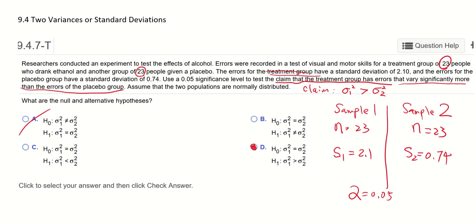Now we can use what we have to find the test statistic. Actually the test statistic for this kind of test comparing two variances or two standard deviations is F.